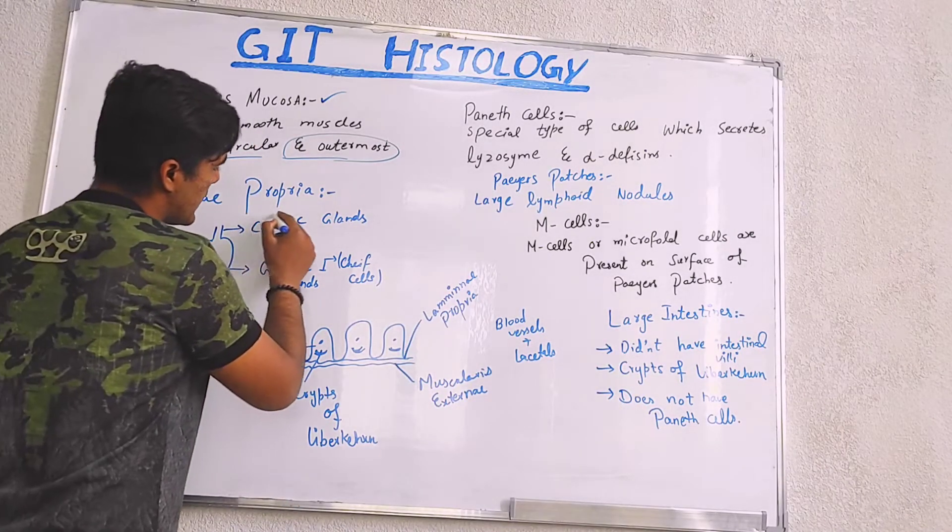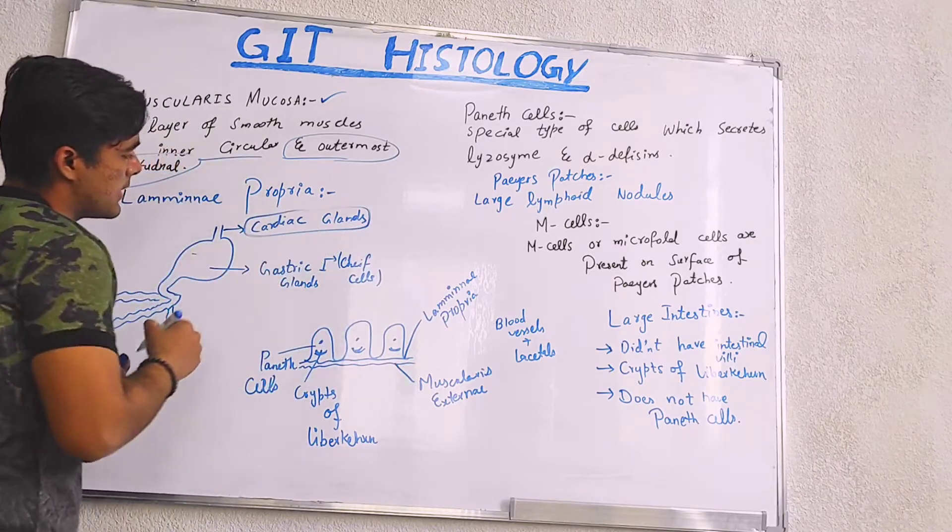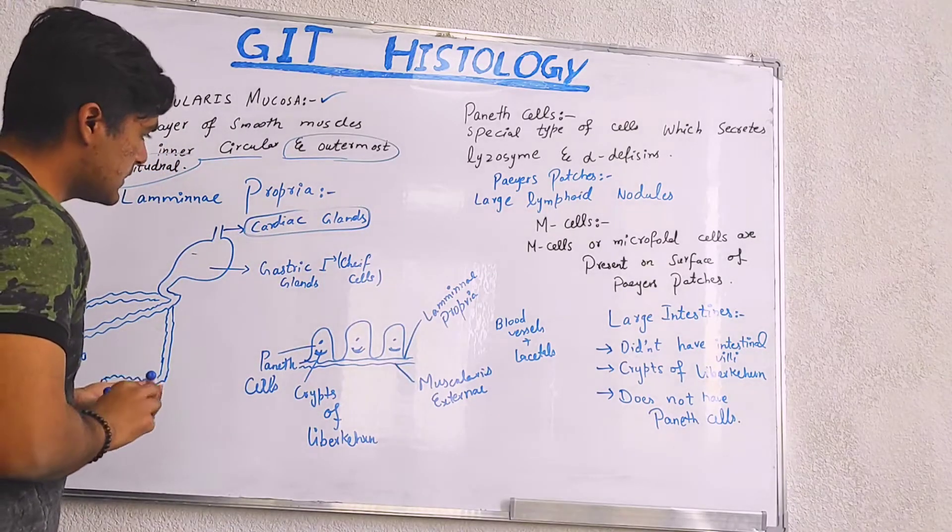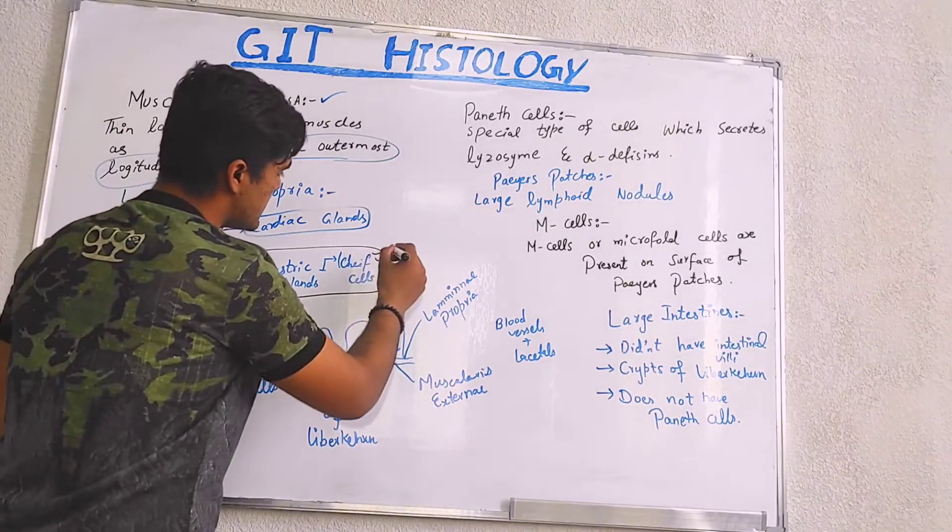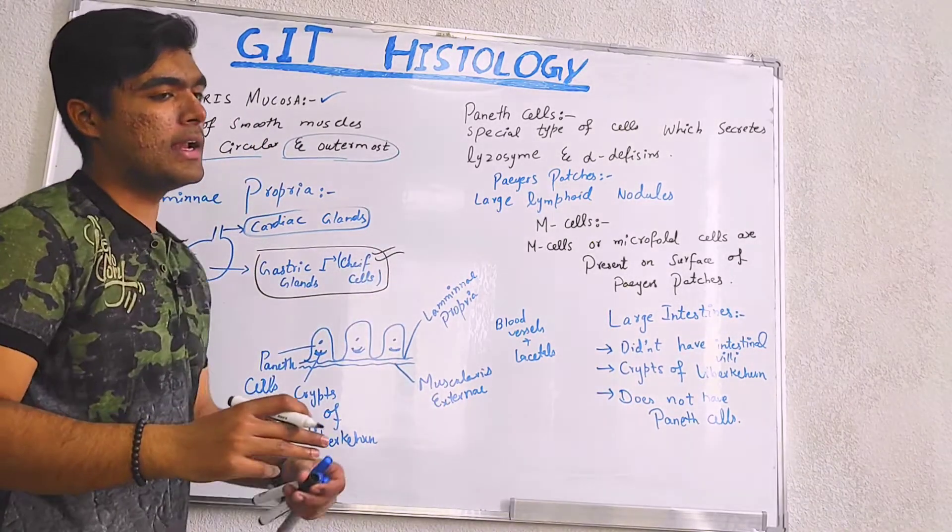So in esophagus, it contains cardiac glands. In stomach, it contains gastric glands which are possessing chief cells having main role in secretion of HCl and pepsinogen.